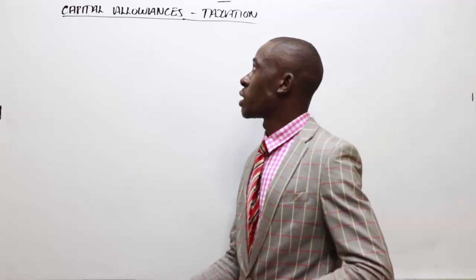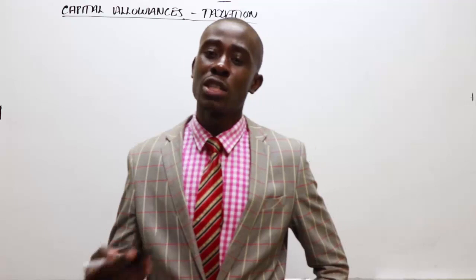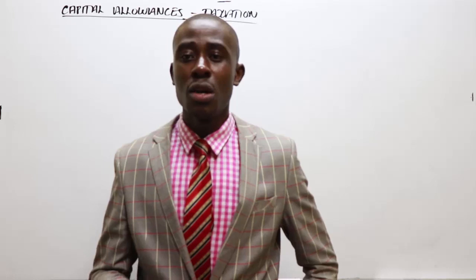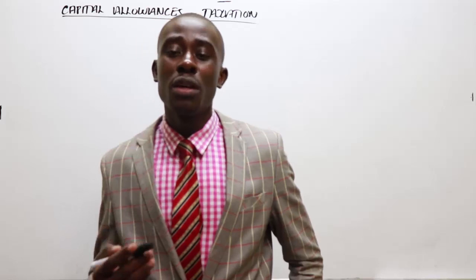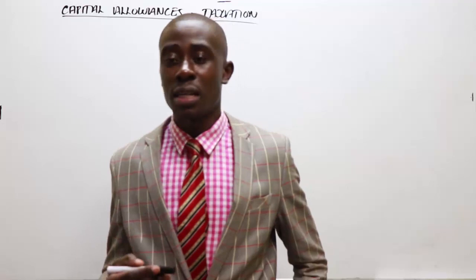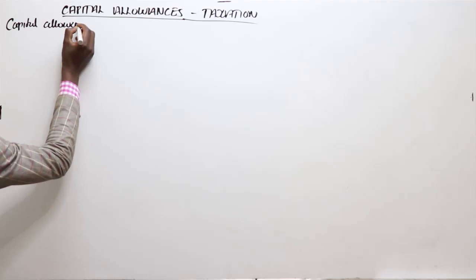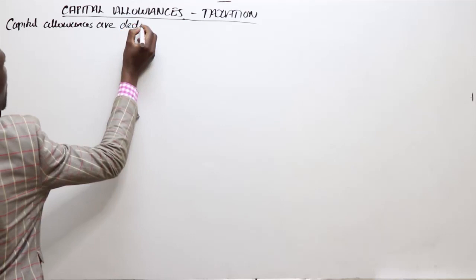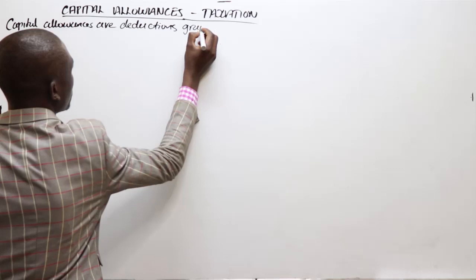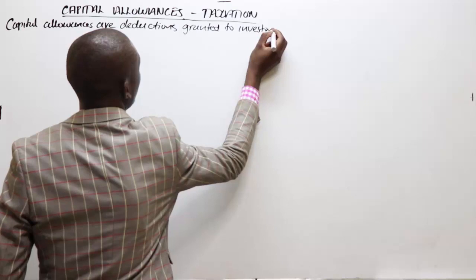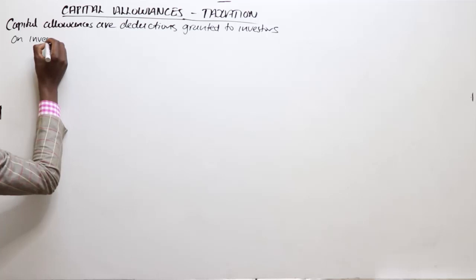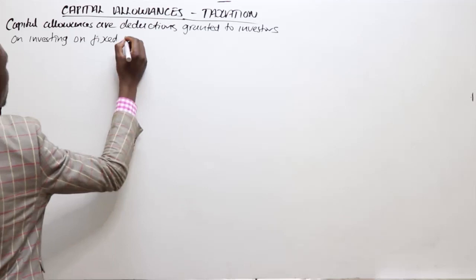To understand the concept behind capital allowances: these are allowances or deductions granted to investors who have invested in various industries, more so on the aspect of non-current assets. In short, capital allowances are deductions granted to investors on investing on fixed assets, or rather non-current assets.